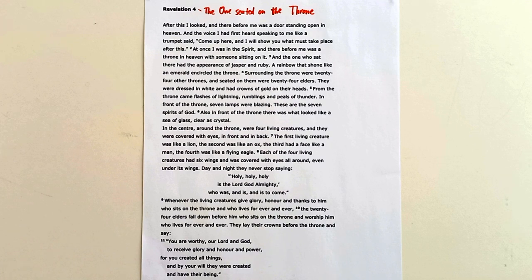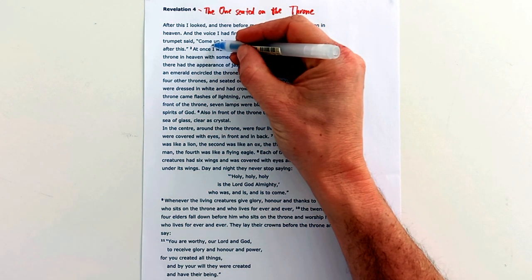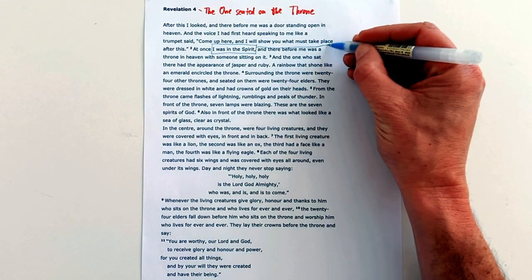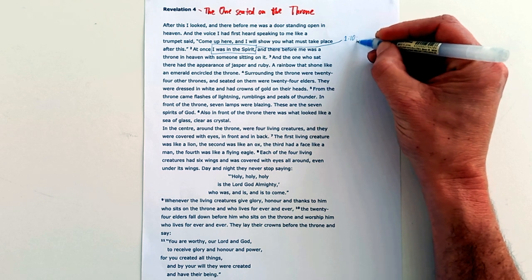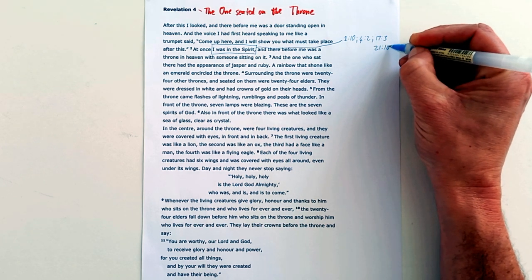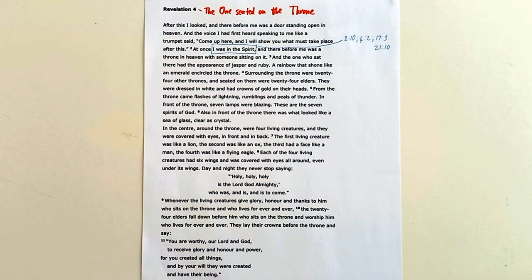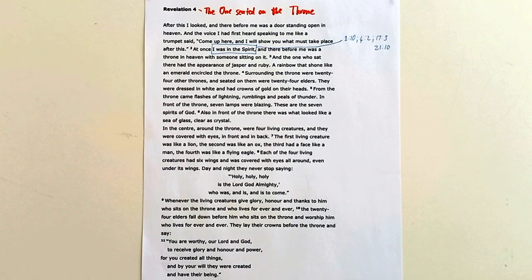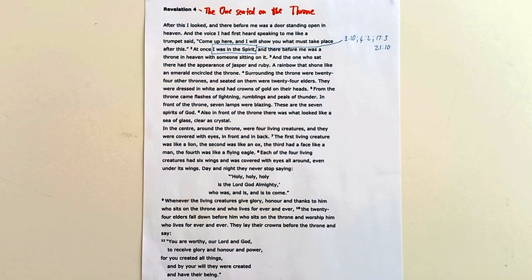The reason this is a new unit is we get a couple of things that show us we are moving to something new — "after this I looked" and "I was in the spirit." We saw this in chapter 1 verse 10, and we see it again in 4 verse 2. We will see it in 17 verse 3 and in 21 verse 10. These are big unit markers. From this point onwards we'll see in chapter 5 the scroll and the one who could break the seals — the Lamb. That scroll is the unfolding story of history, the last days that we're living in right now.